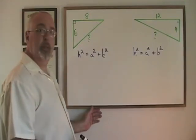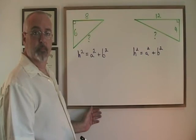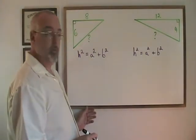It is very useful to be able to use Pythagoras' Theorem to find the hypotenuse in a right triangle. Pythagoras' Theorem is the formula h squared equals a squared plus b squared.